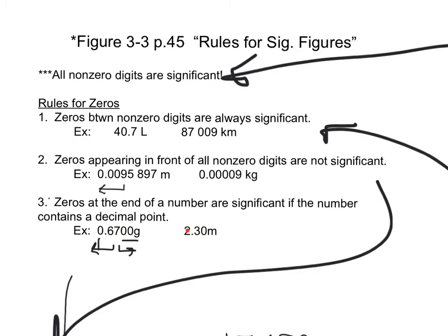Same with the next number — my 2, 3 are my non-zero digits, and the zero to the right of them counts because there's a decimal point.